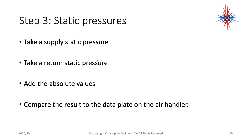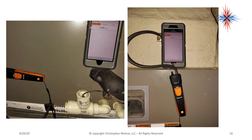Now we want to take static supply pressures, static return pressure, and then add the absolute values. Static pressure is the outward pressure — it's not velocity pressure, it's not the pressure of the air moving. It's the outward pressure on the ductwork. We drop the signs because our supply is going to be positive and return is going to be negative, then we add them together and compare that to the data plate on the air handler. Here's an example.